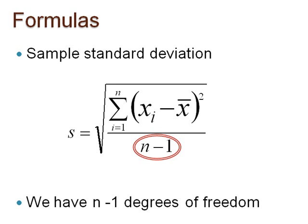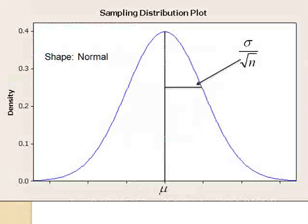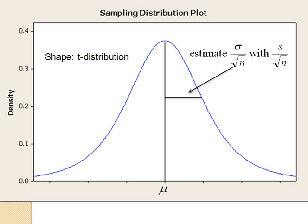When considering the sampling distribution of sample means, the quantity sigma over the square root of n is estimated by s over the square root of n. When this estimate is made, the sampling distribution of sample means cannot be treated as a normal distribution anymore. The shape can now be described as a t-distribution. This is because if we took many samples, we would discover that s varies from sample to sample, just like x-bar does.